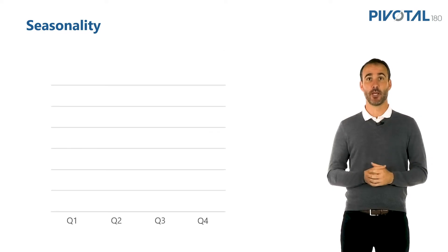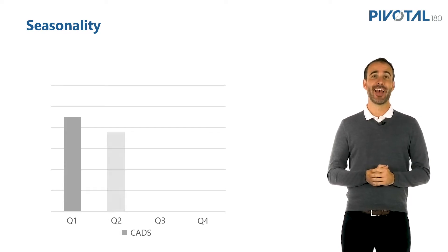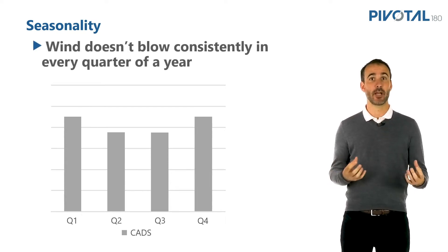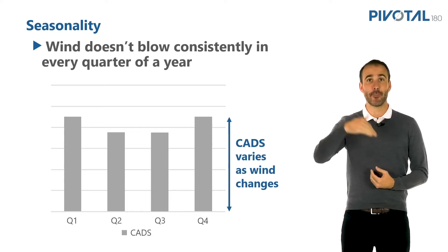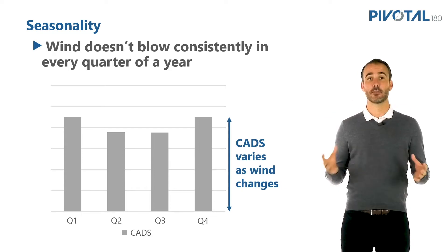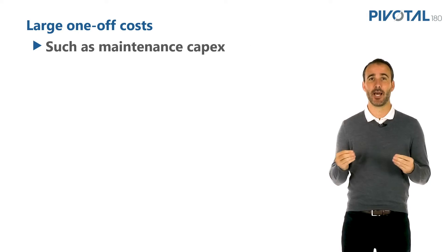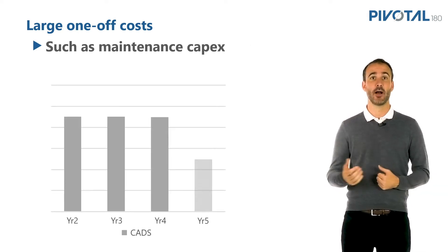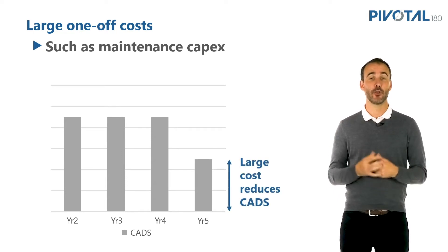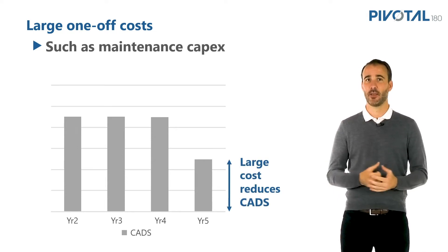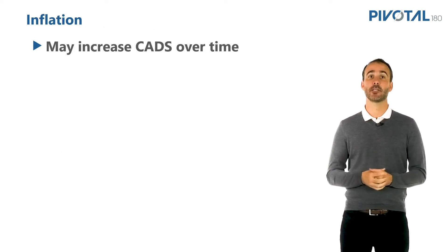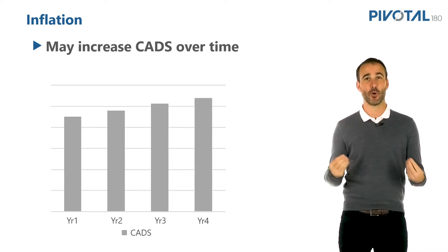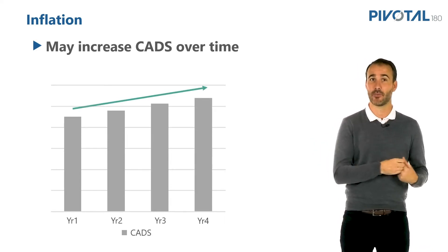Maybe let's take a renewables project. The wind is blowing at different levels through different months of the year, so you're generating more energy and your cash flows are going up and down throughout the year. Second, major maintenance — maybe you have a large one-off cost and have to replace a major piece of equipment in year five, so your CADs will be lower in year five. Thirdly, maybe inflation is increasing CADs over time, constantly going up, so towards the end of the loan we might have more CADs to pay our debt than we did at the beginning.